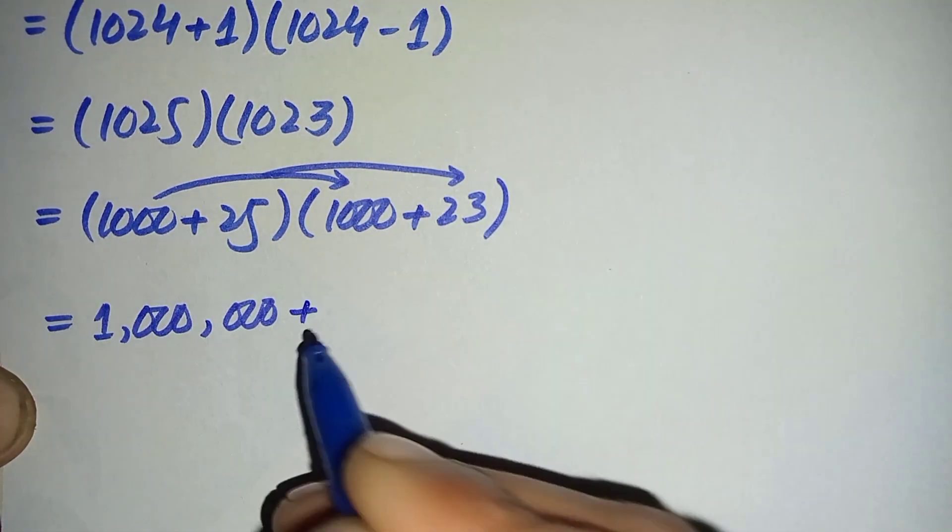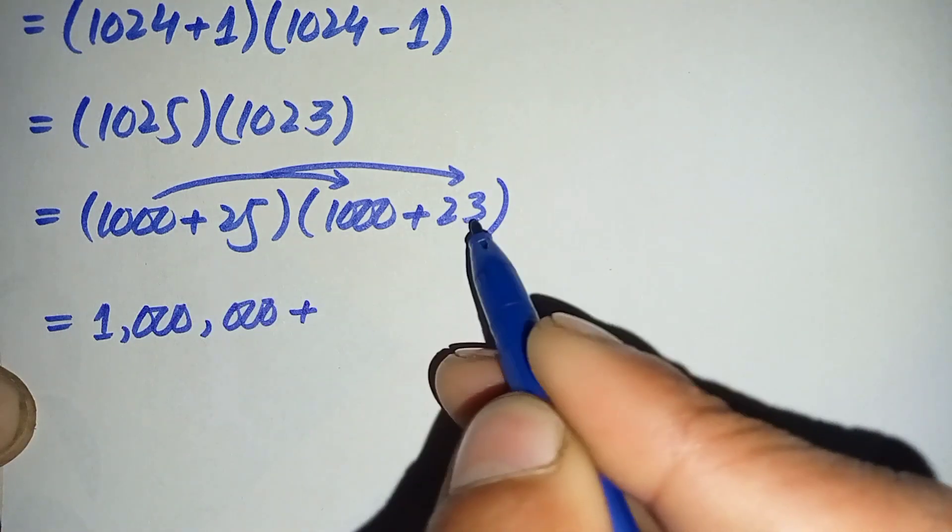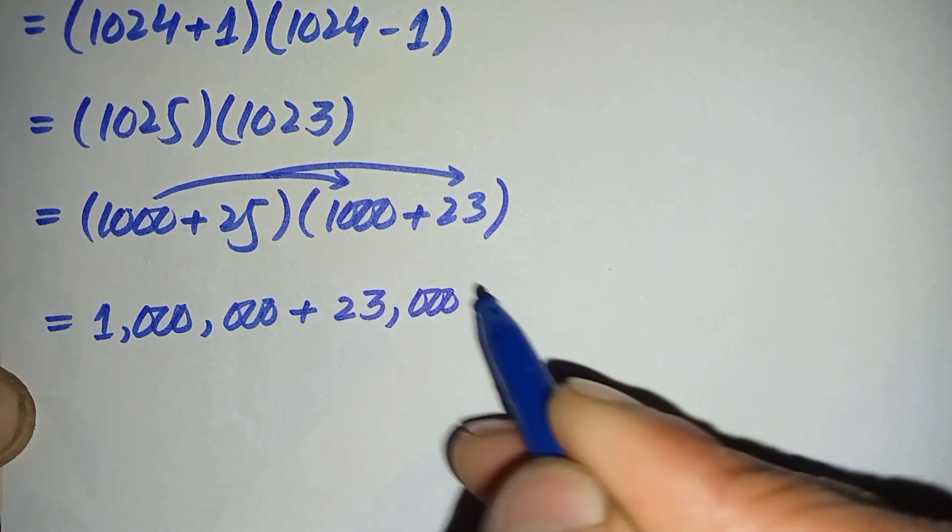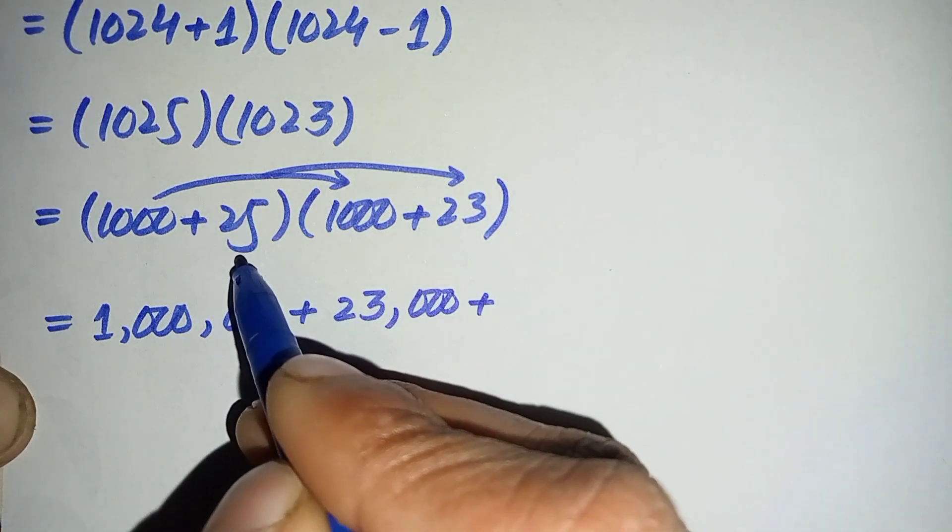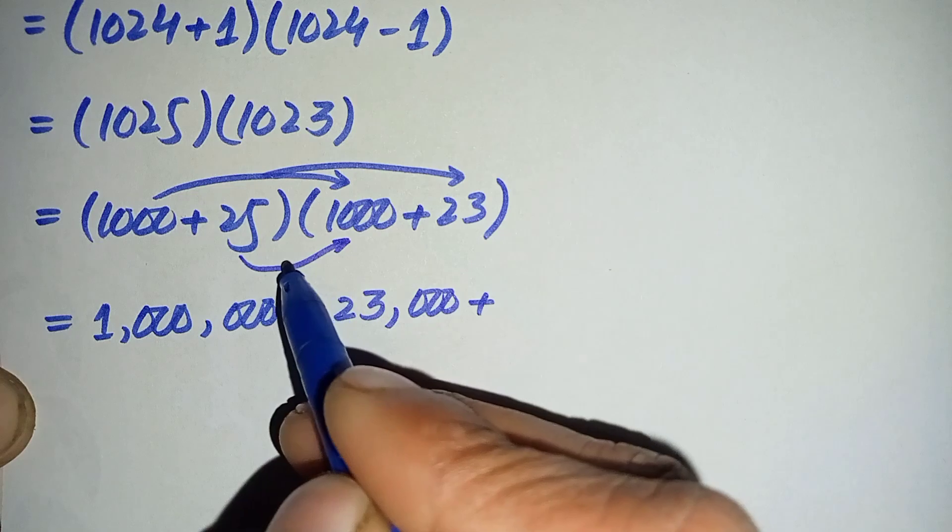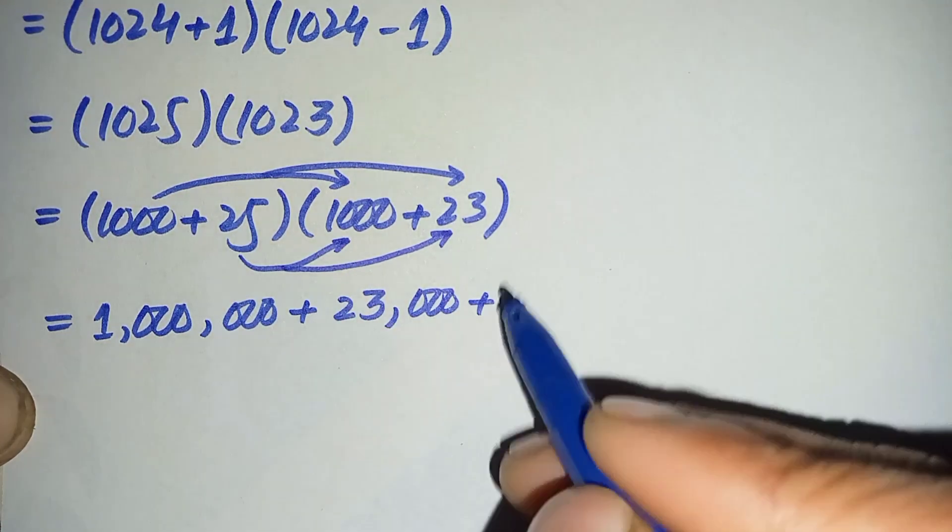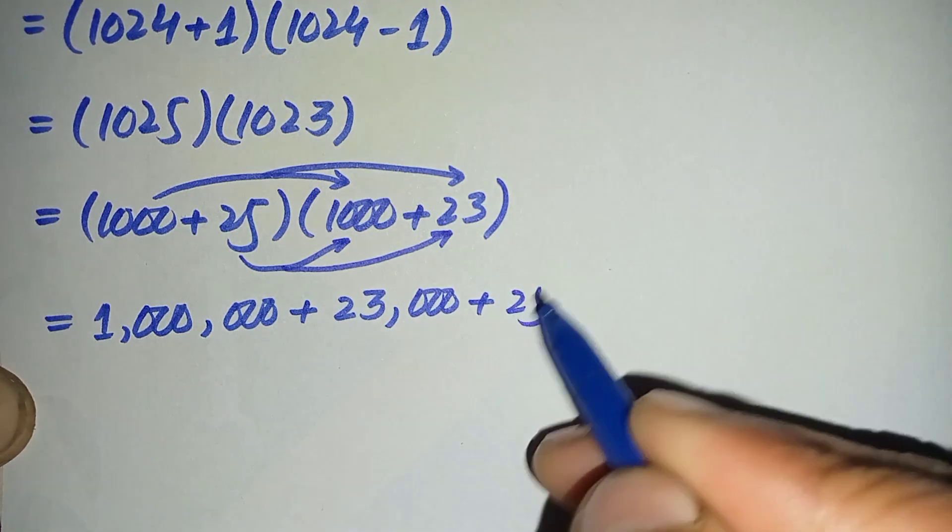Plus, now we'll multiply this 25 with these two numbers. 25 times 1000 is 25,000, plus we'll multiply 25 by 23.